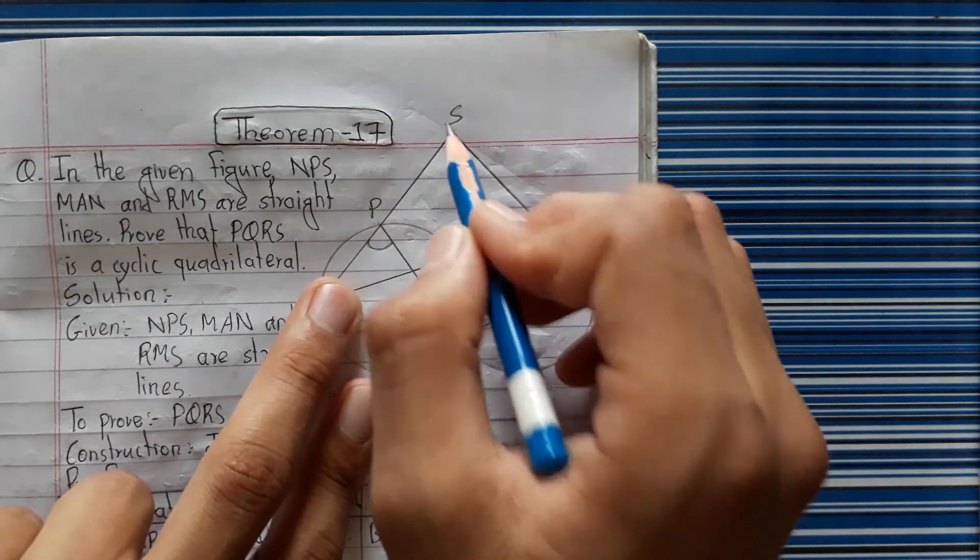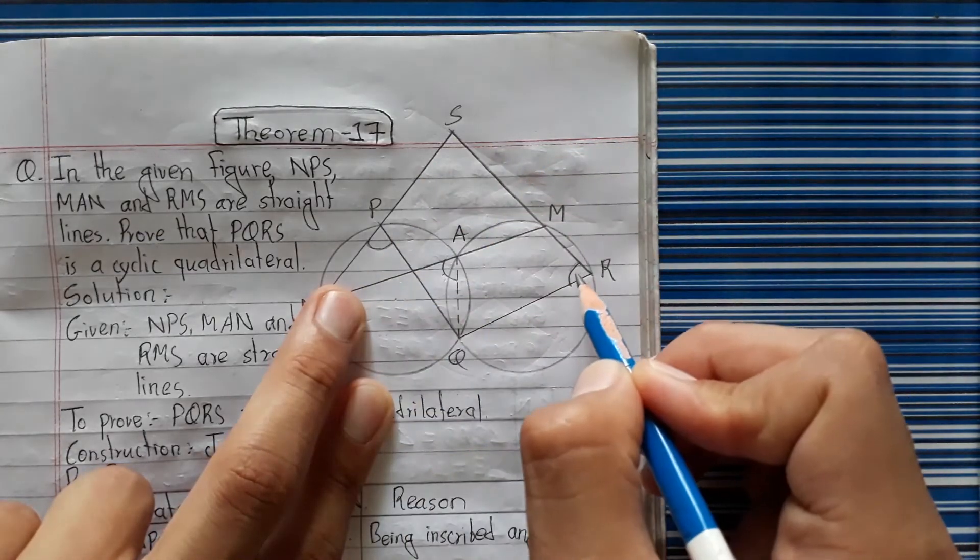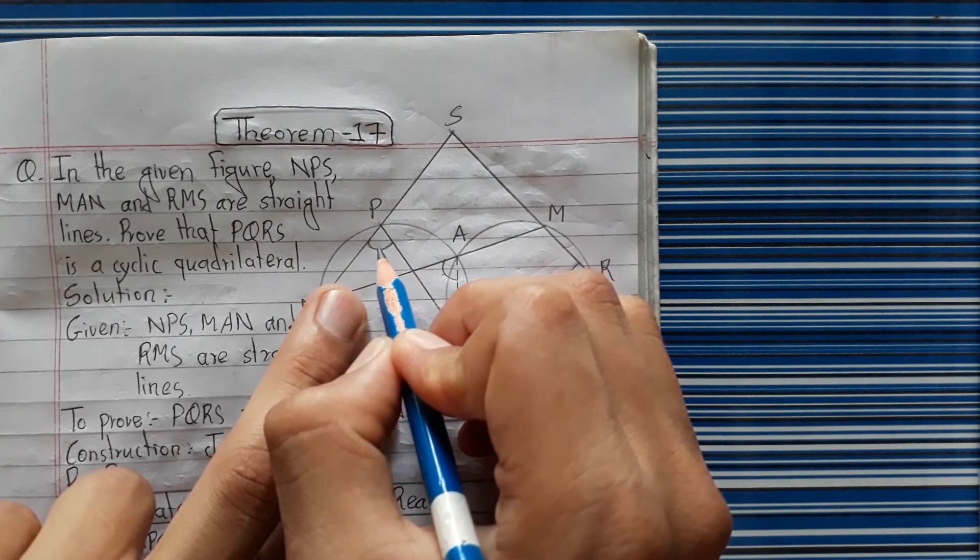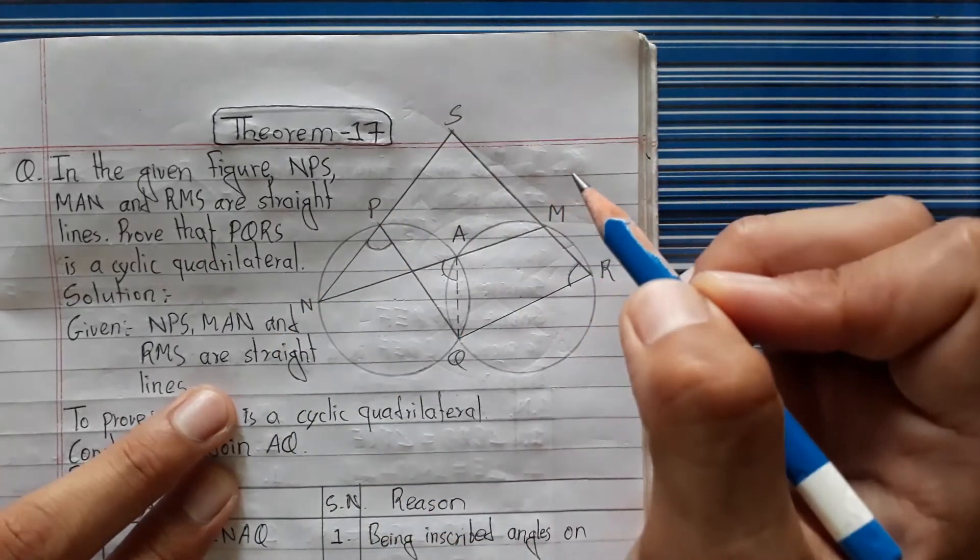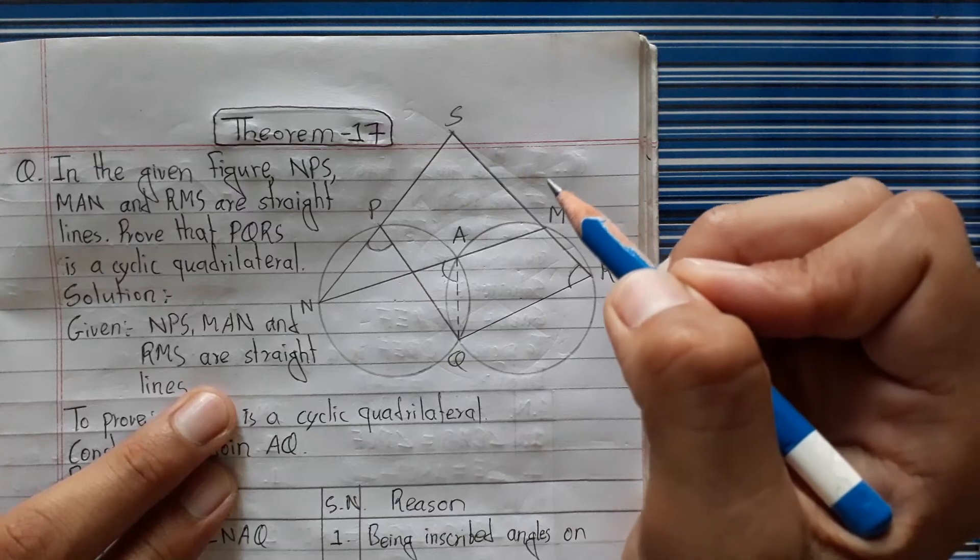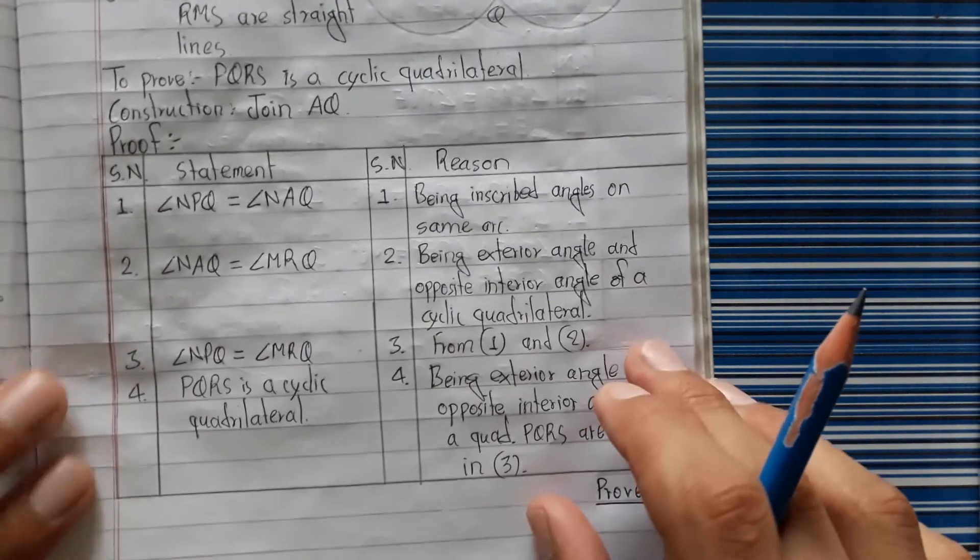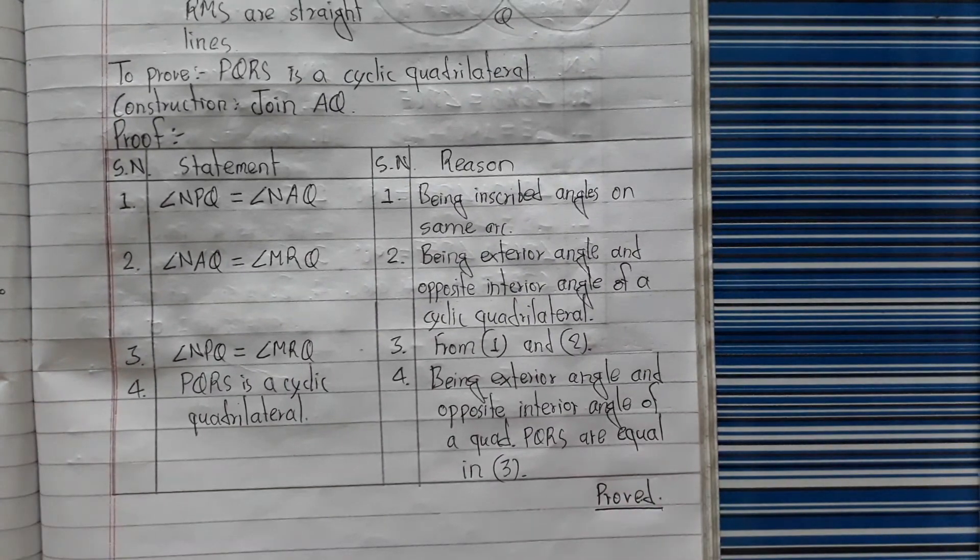For PQRS, the quadrilateral's interior angle opposite to the exterior angle are equal. PQRS is also a cyclic quadrilateral, which proves the statement.